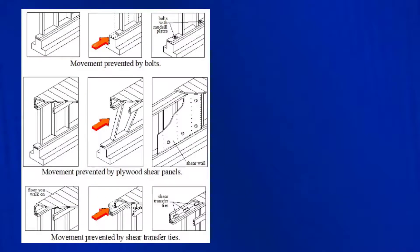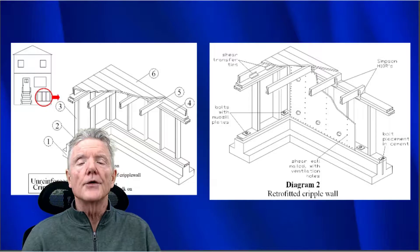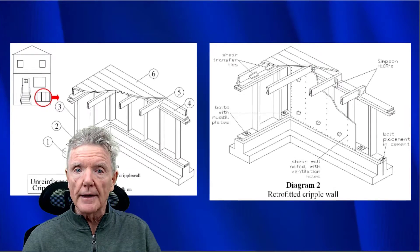Let's review everything we've learned. Here is the mud sill at the base of our cripple wall — earthquake force tries to push it off the foundation, and we have the bolts to stop that. Here we have the full cripple wall with the earthquake force trying to tip it over, and we've put plywood on it to prevent that. Finally, here is the floor framing with earthquake force trying to slide it off the top of the cripple wall, so we put in shear transfer ties, also known as floor connectors.